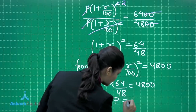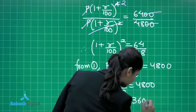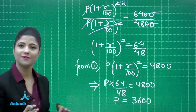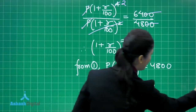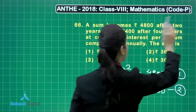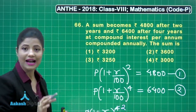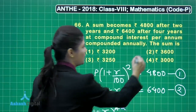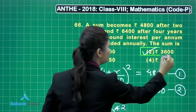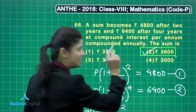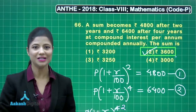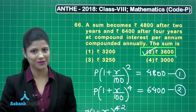Solving, the principal comes out to be rupees 3600. This is a basic application of compound interest. Out of the four options, the sum is rupees 3600, which is option number 2 — the correct answer for this question. I hope it is clear. Let us proceed to the next question.